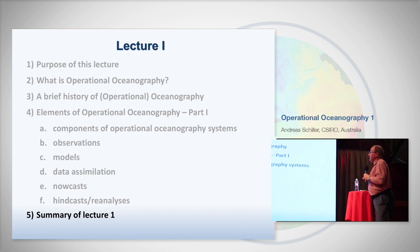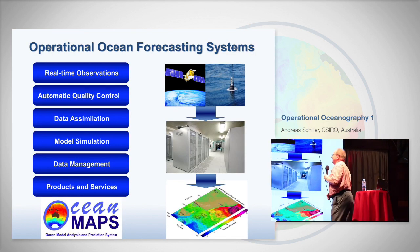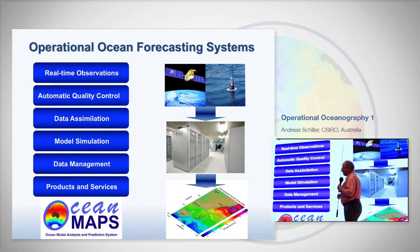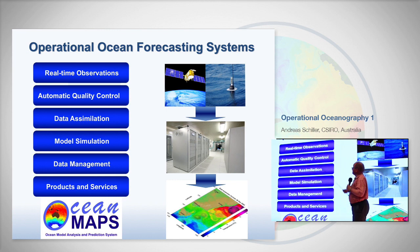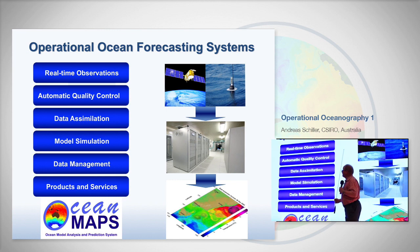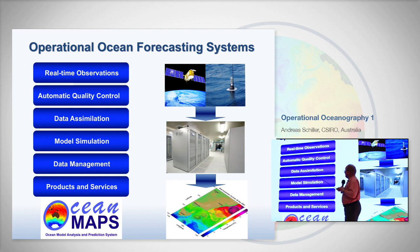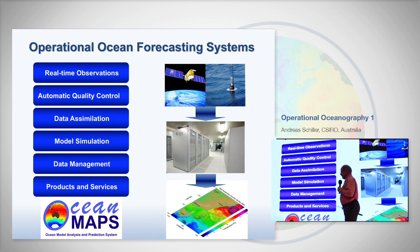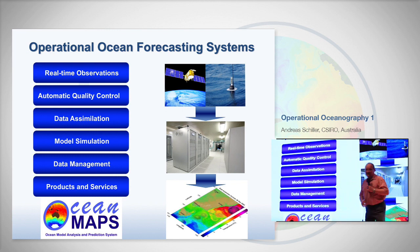Summarizing: the take-home message from this lecture is to be aware of the overall complexity of operational oceanography — the combination of observations, real-time quality control, which has to happen automatically in ocean forecasting; the key element of data assimilation; and the quality of the model. Data assimilation can always correct a model but it can't really overcome a bad model, so your model should already do a reasonable job before you start assimilating observations. Issues of data management and product and service delivery are also important. Thank you.